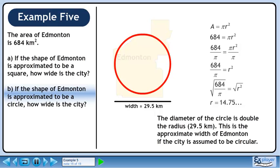The diameter of the circle is double the radius, 29.5 kilometers. This is the approximate width of Edmonton if the city is assumed to be circular.